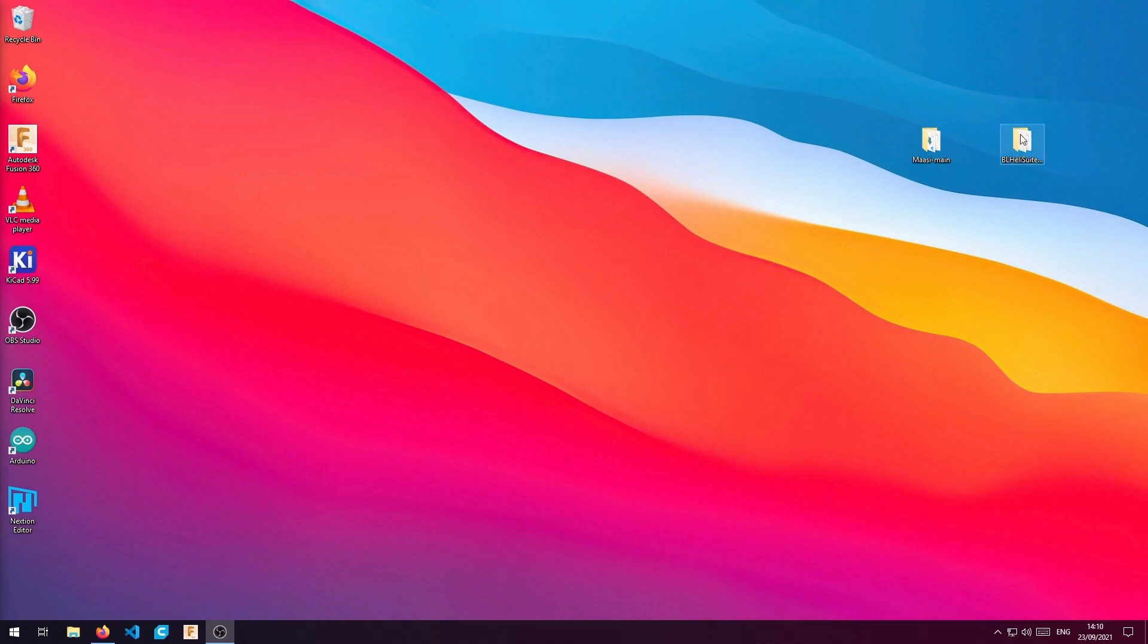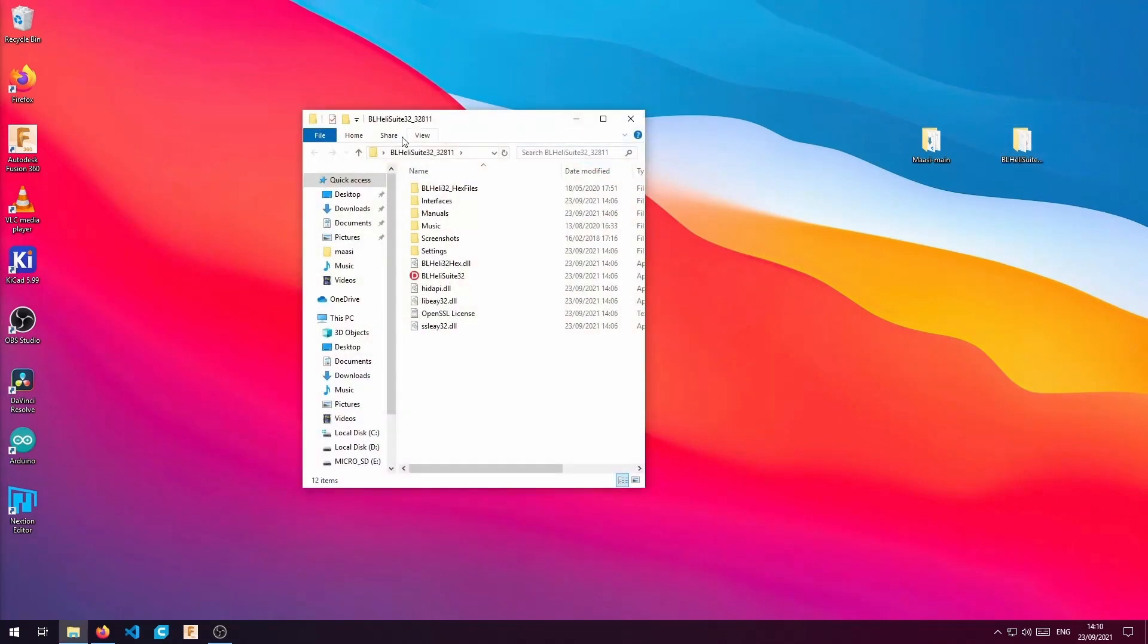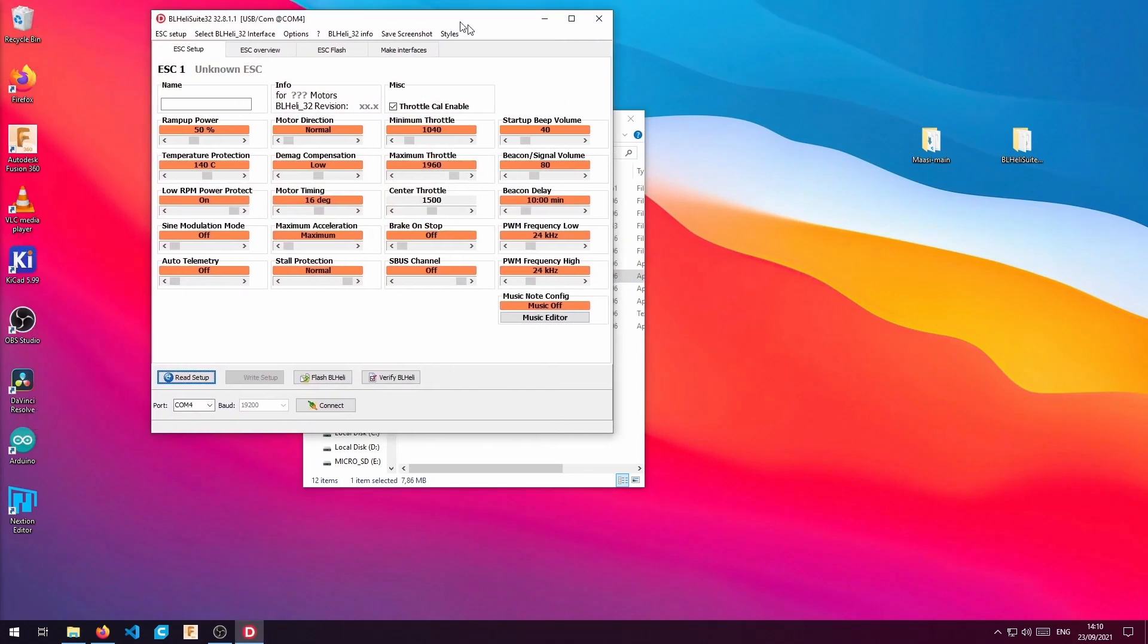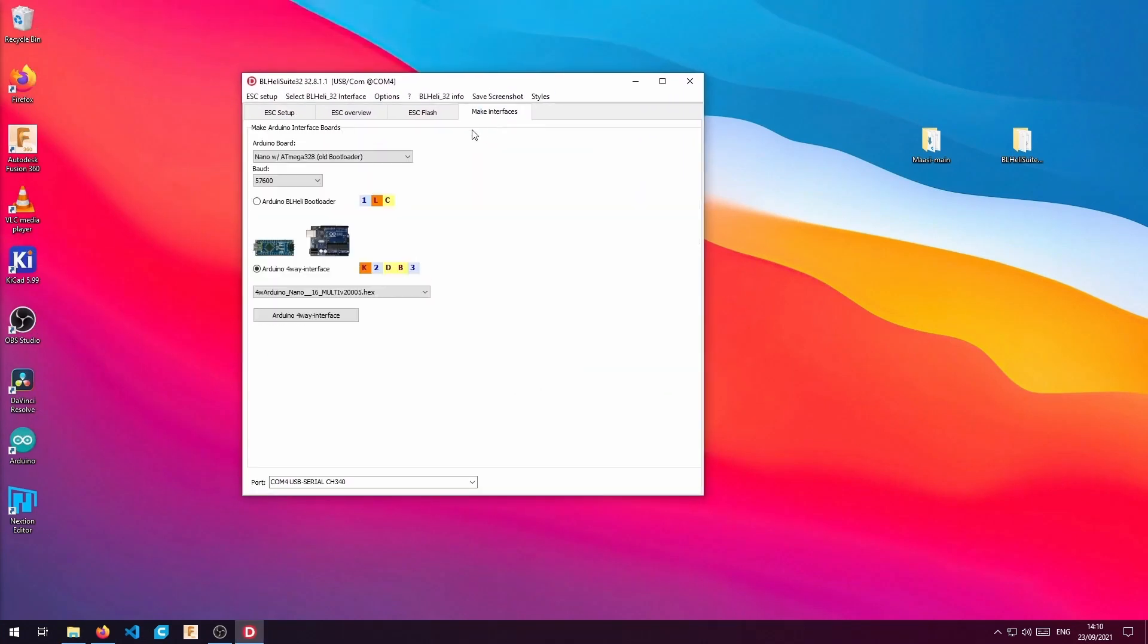The next step is to flash the ESC with the latest BLHeli32 firmware. We will need to download the BLHeli32 suite and prepare the Arduino Uno as flashing device.